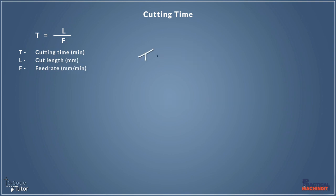So in our metric example this time, let's take our cut length at 50 millimeters. And we're going to give it a feed rate of 150 millimeters per minute. So we just have 50 divided by 150. And that will give us a result of 0.33 of a minute. So a third of a minute.